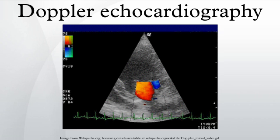One of the limitations is that the ultrasound beam should be as parallel to the blood flow as possible. Velocity measurements allow assessment of cardiac valve areas and function, any abnormal communications between the left and right side of the heart, any leaking of blood through the valves, calculation of the cardiac output, and calculation of the E/A ratio. Contrast-enhanced ultrasound using gas-filled microbubble contrast media can be used to improve velocity or other flow-related medical measurements.